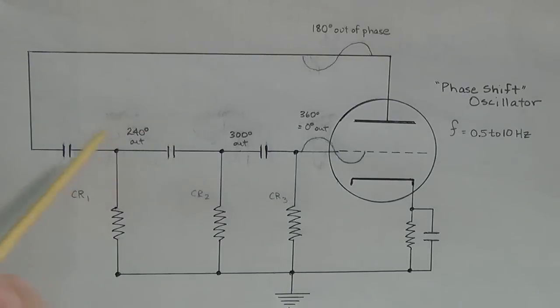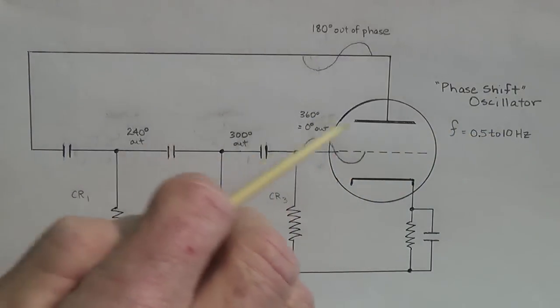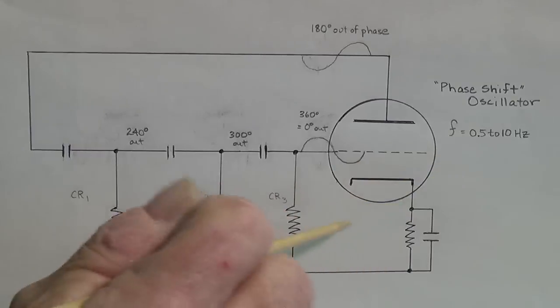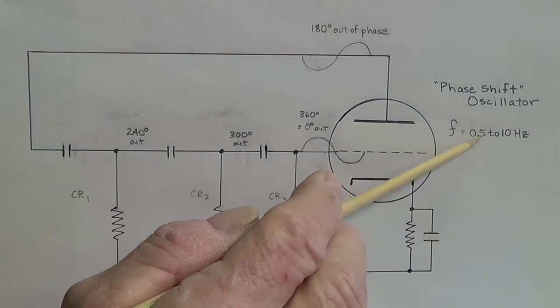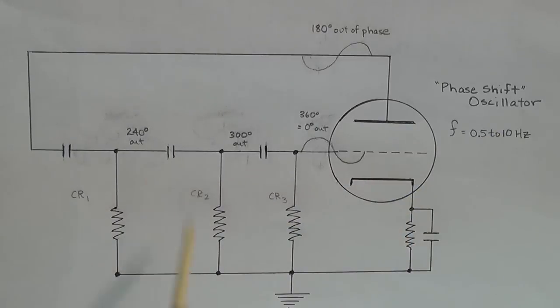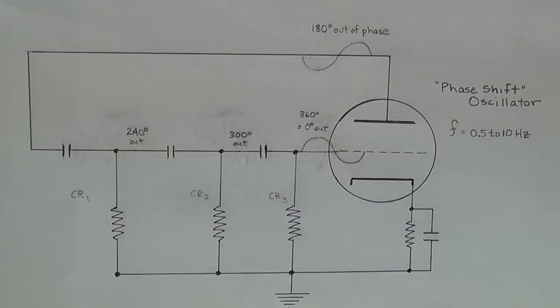Also, the values that we choose for the capacitor and resistor will determine the speed of oscillation. We can pick values, they're generally around 0.02 microfarads and really high resistance, around 1 megaohm of resistance, which will give us an oscillation frequency of about 0.5 to 10 cycles per second. Now the 0.5 is going to be a very slow, swampy tremolo, and the 10 is going to be a much faster rate of tremolo.